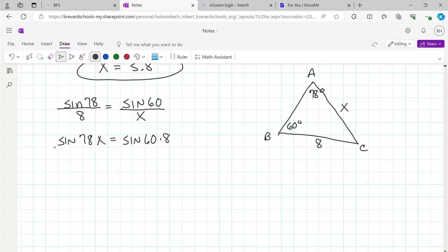Now we can divide both sides by sine 78. Sine 78s cancel, and our x equals 60 sine times 8. Make sure you hit the equal sign and then divide by 78 sine. And I got 7.1.